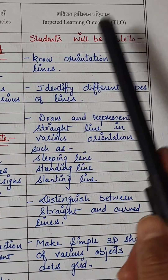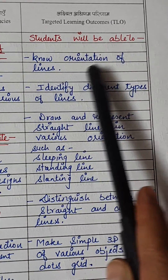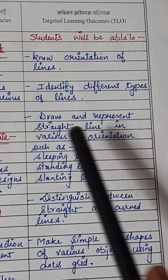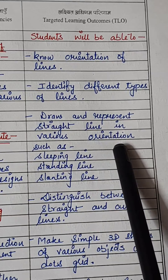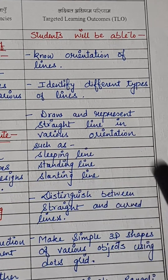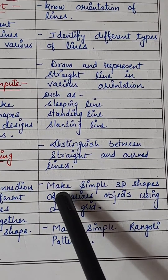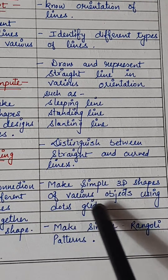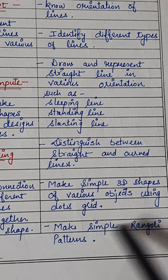Now let's see the targeted learning outcomes. Students will be able to know the orientation of lines, identify different types of lines, draw and represent straight lines in various orientations such as sleeping line, standing line, and slanting line. They will distinguish between straight and curved lines, make simple shapes of various objects using a dot grid, and learn making simple Rangoli patterns.